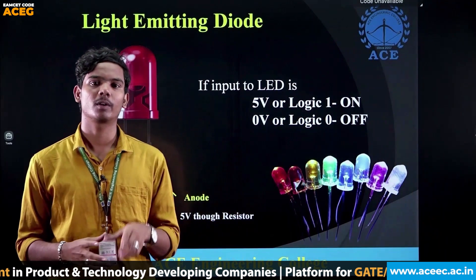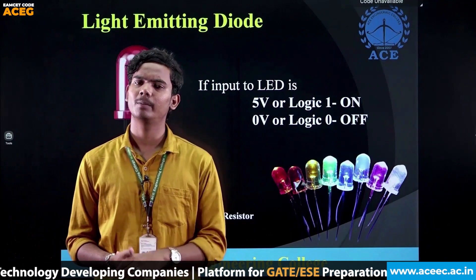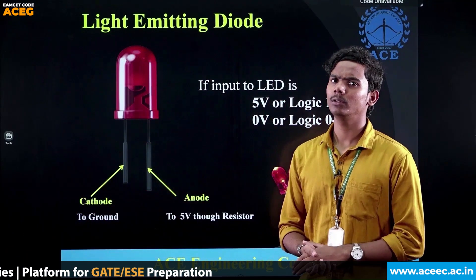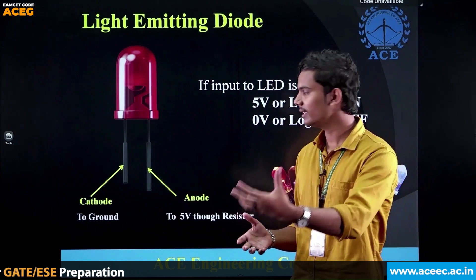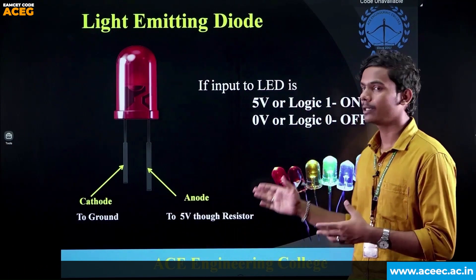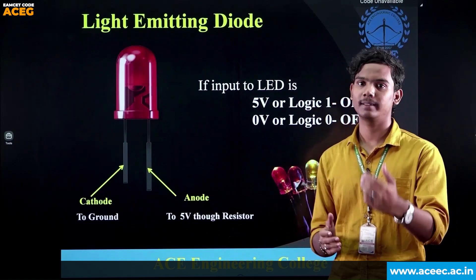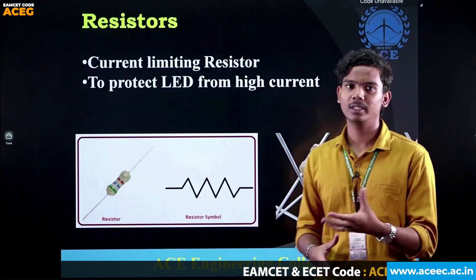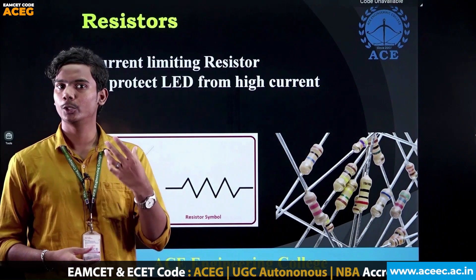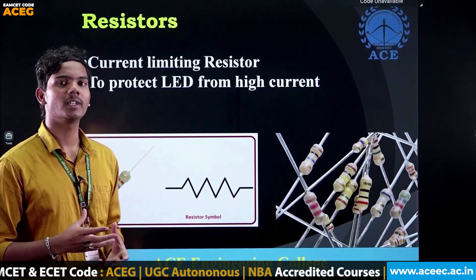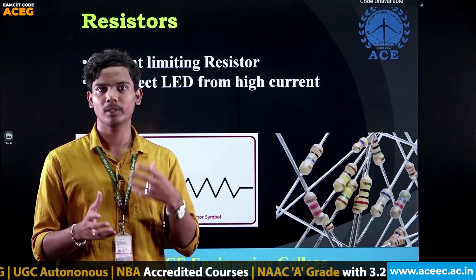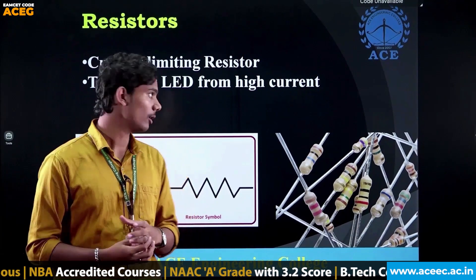One of the main components is the LED — a light-emitting diode. It has two terminals: the cathode, which is connected to ground, and the anode, which is connected to 5 volts through a resistor. Resistors are used in this project to increase the durability of the LED and to protect it from current fluctuations and voltage drops.